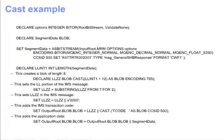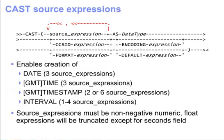This slide shows an example of building an IMS message on ZOS. Cast now permits more flexibility in source expressions than previous releases to allow you to produce a date, time, timestamp, or interval from numeric data. Below the syntax diagram, you see a summary of the number of source expressions allowed for the various time expressions when performing this conversion. These source expressions must be non-negative, and float expressions used in these source expressions will be truncated, except for the seconds field.